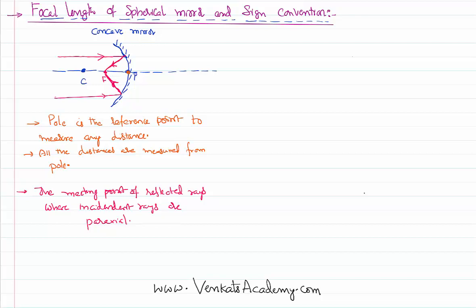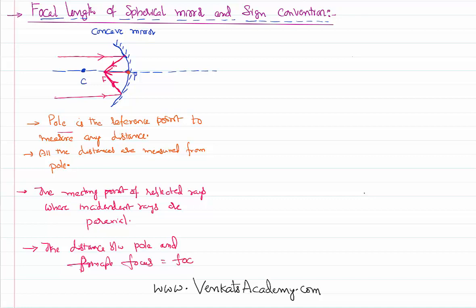The distance between the pole and the principal focus is called the focal length. Be careful: while measuring this distance, we start from the pole itself, because the pole is the reference point. This distance from the pole to the principal focus is called the focal length.